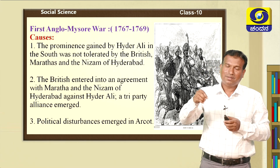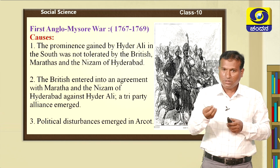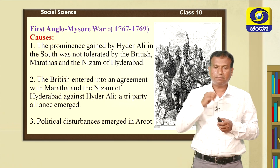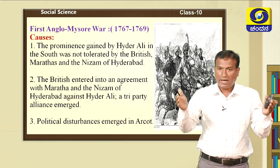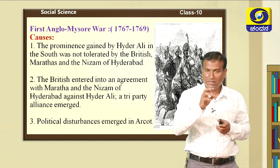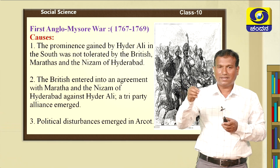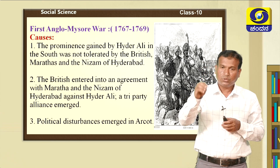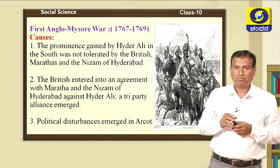That is why the Marathas had enmity with Haidrali. The growth of Haidrali alarmed the British, Marathas, and Nizam of Hyderabad. The English seized the opportunity and made an alliance with the Marathas and the Nizam of Hyderabad — this is called the Tri-Party Alliance. But Haidrali was very diplomatic and cunning. With his diplomacy, he broke the alliance of the English with the Nizam and Marathas, creating enmity among them.